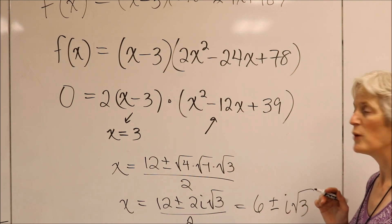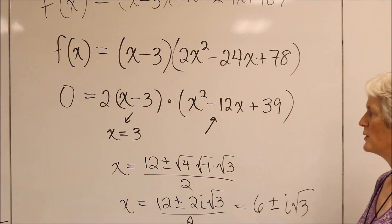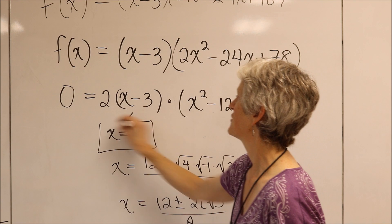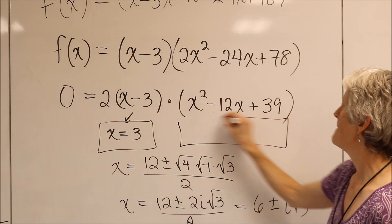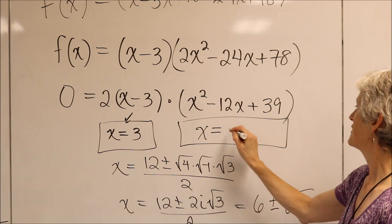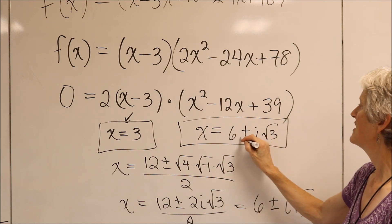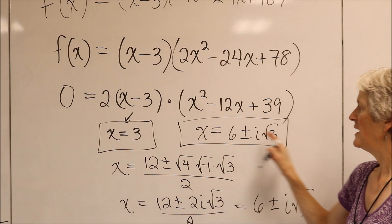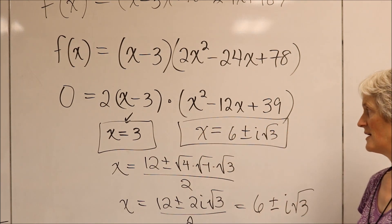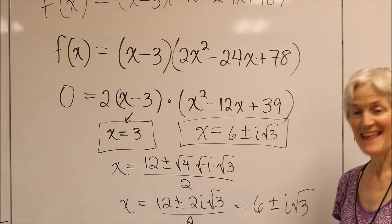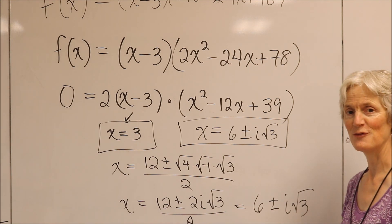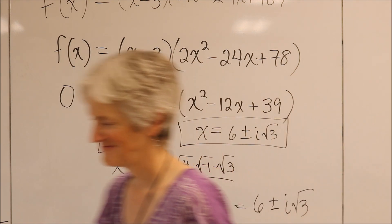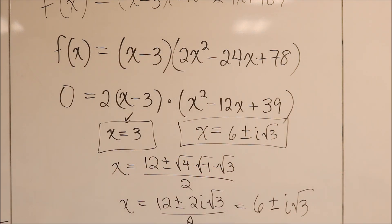And, ladies and gentlemen, we have done it. We have found our three roots. x equals 3 was our real root and our two imaginary roots are 6 plus i times the square root of 3 and 6 minus i times the square root of 3. So we have found the three roots. And sure enough, one is real and two are imaginary. That was a fun problem. I hope you found it as fun as I did. Thank you. I hope you enjoyed it. Thanks so much for watching. Bye-bye.